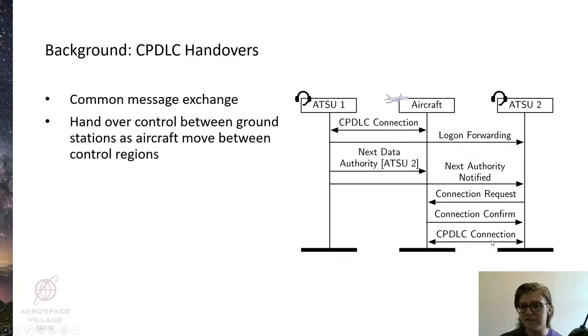Another message is then sent over the ground to the new ground station, indicating that the aircraft has been sent this message, and then the new ATSU sends a connection request to the aircraft, which is confirmed. Occasionally there is a termination request confirm handshake from the old ATSU under certain implementations of the protocol.